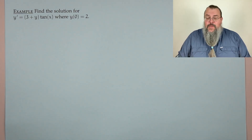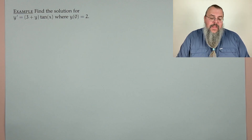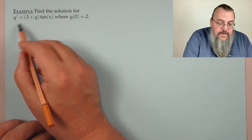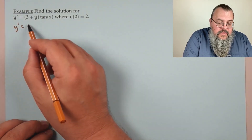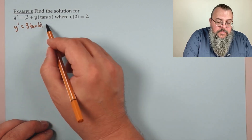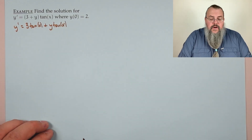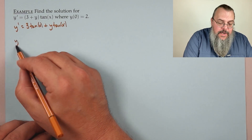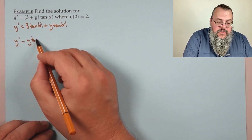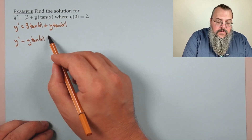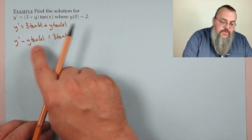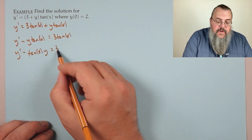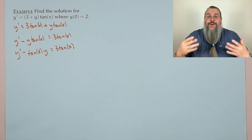Another example: y′ = 3 + y·tan(x). Distributing: y′ = 3tan(x) + y·tan(x). Move the y·tan(x) term across: y′ − tan(x)·y = 3tan(x). We already have a coefficient of 1 in front of y′, so our p(x) = −tan(x).